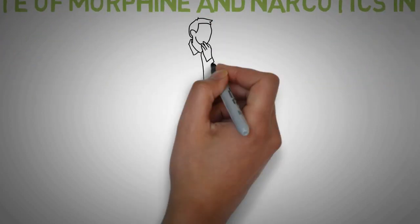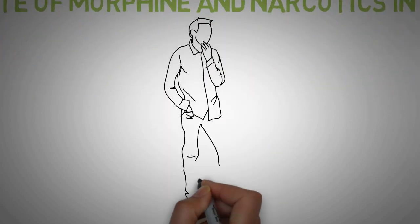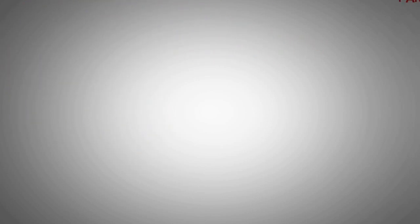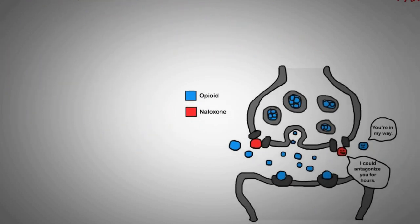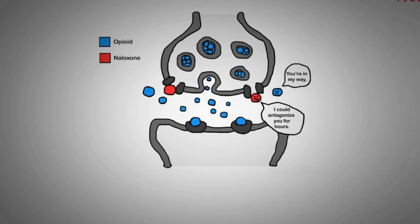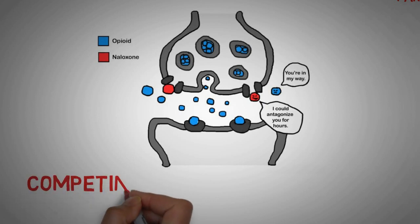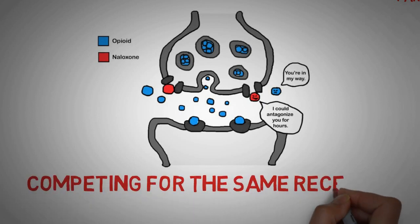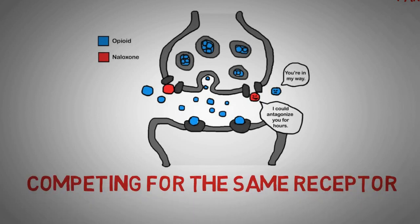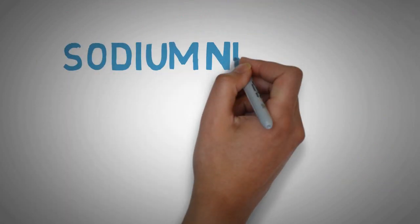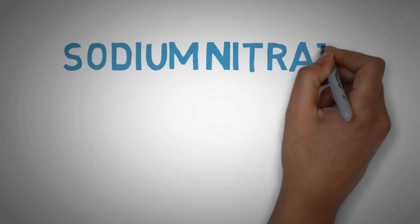While the mechanism of action of naloxone is not fully understood, it is thought that naloxone antagonizes the effect of opioids by competing for the same receptors, especially the opioid mu receptor. Number five: sodium nitrate.